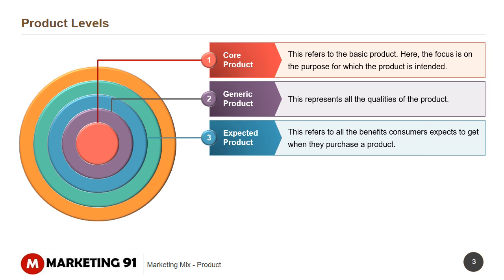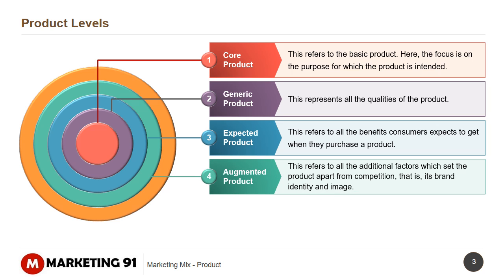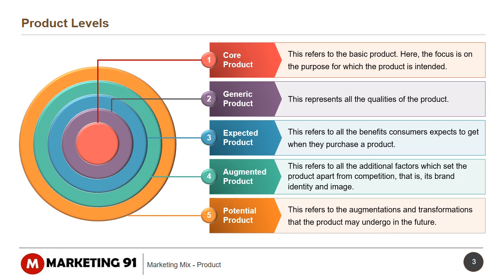Expected Product refers to all the benefits consumers expect to get when they purchase a product. Augmented Product refers to all the additional factors which set the product apart from the competition, such as its brand identity and image. Potential Product refers to the augmentations and transformations that the product may undergo in the future.